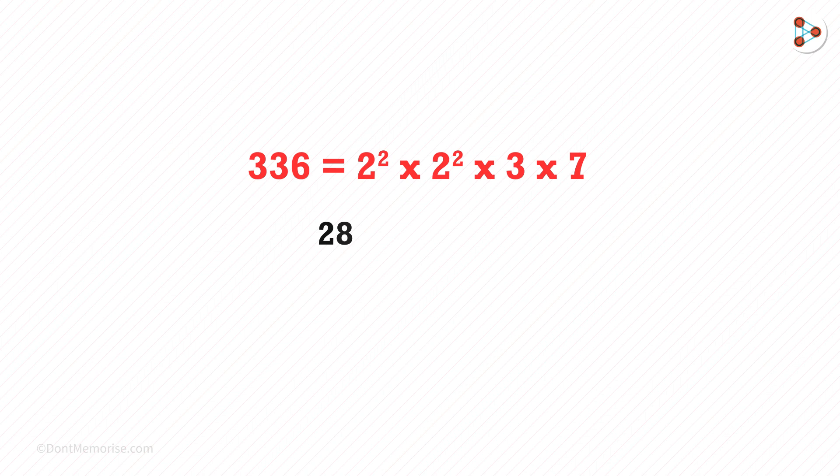How can we write 28? Yes, 2 squared multiplied by 7. Similarly, here is the prime factorization of the other two numbers.